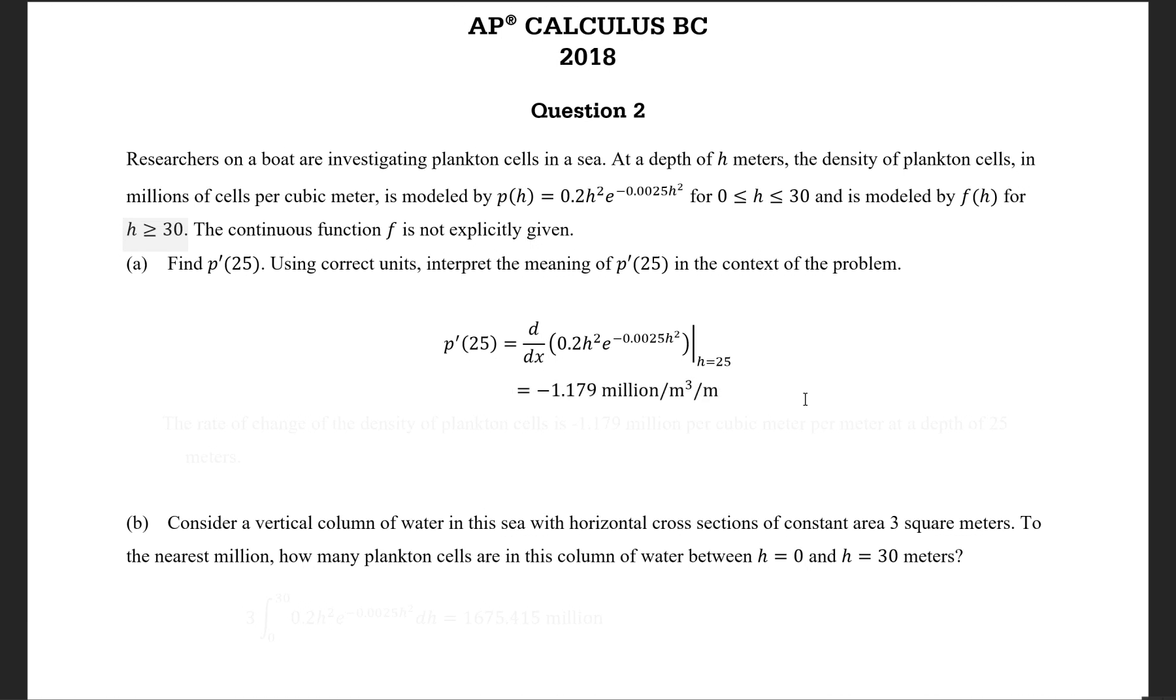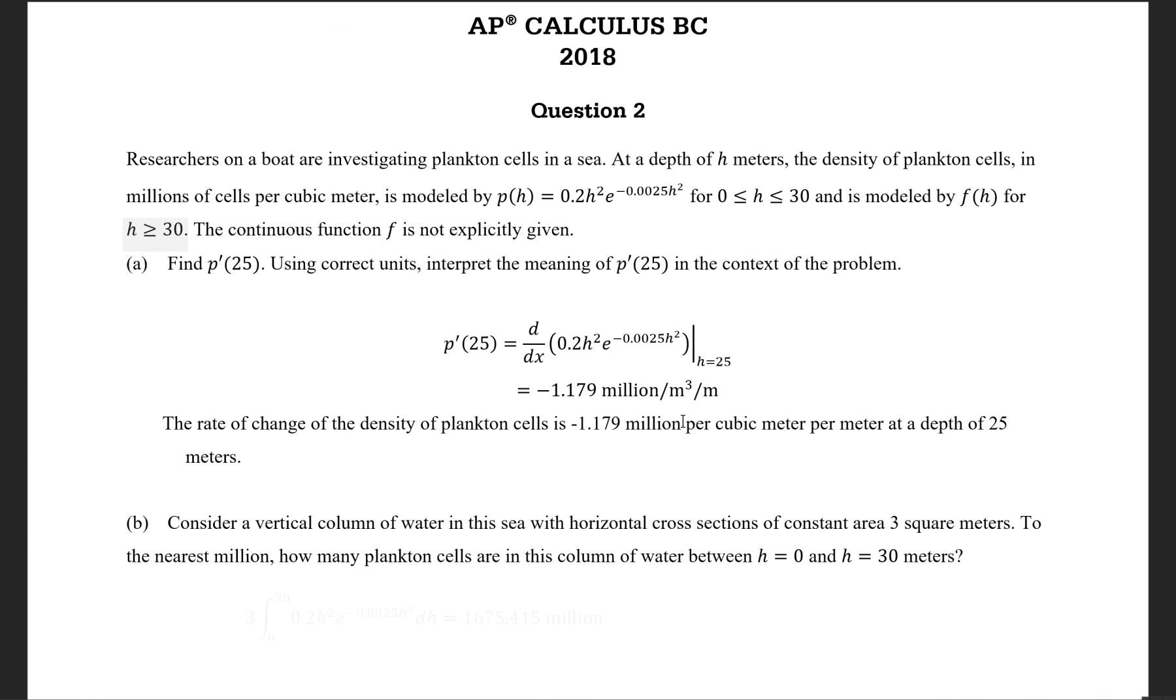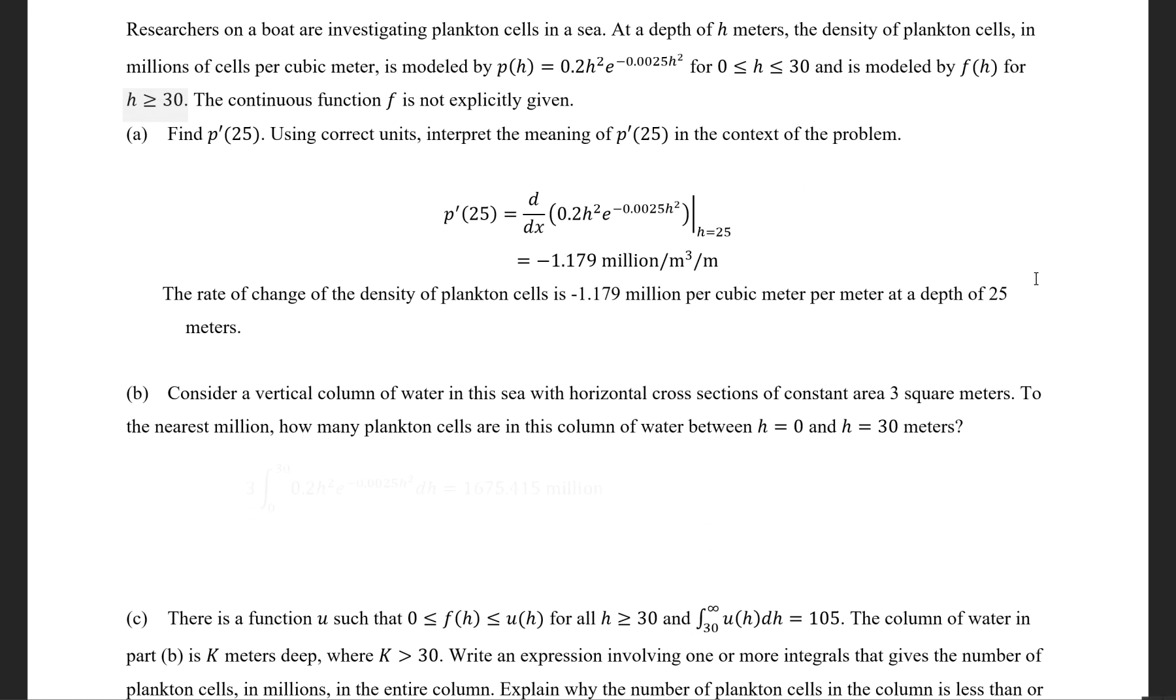Yeah, and what this basically means is that the rate of change of the density of plankton cells is negative 1.179 million cells per cubic meter per meter at the depth of 25 meters. In other words, at 25 meters, the rate of change in the density is negative 1.179 million. So, as you go down, the number of plankton cells within a region decreases.